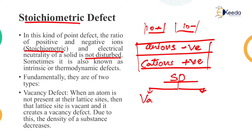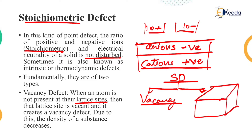The stoichiometric defect is divided into two types. The first type is the vacancy defect. When an atom is not present in the lattice site — the lattice site being the 3D positions in a three-dimensional arrangement — that lattice site is vacant and it creates a vacancy defect. Due to this, the density of a substance decreases.